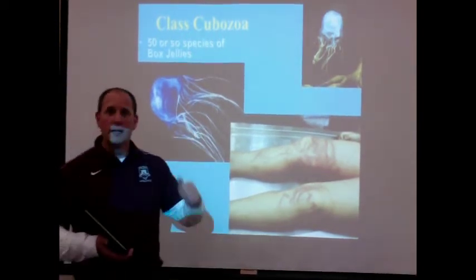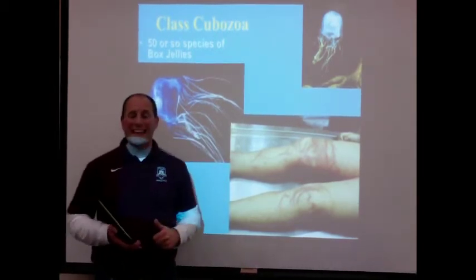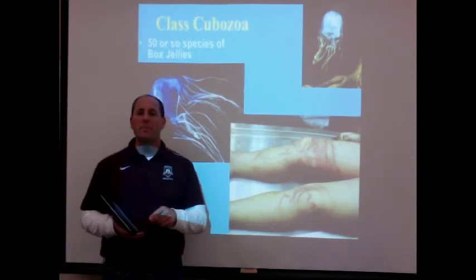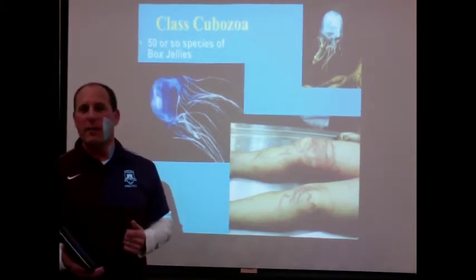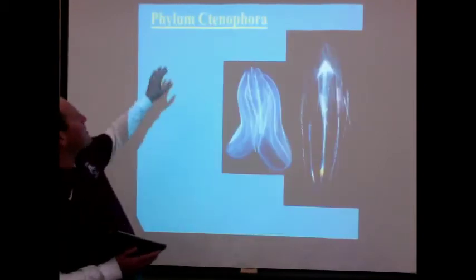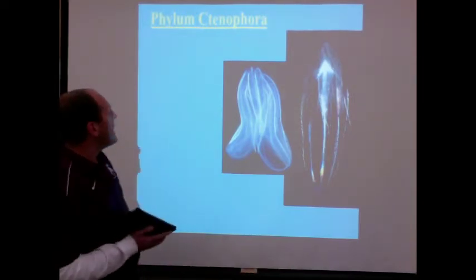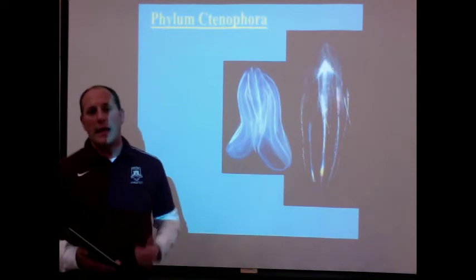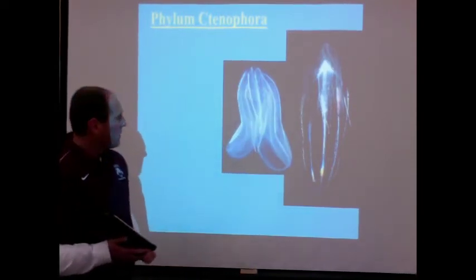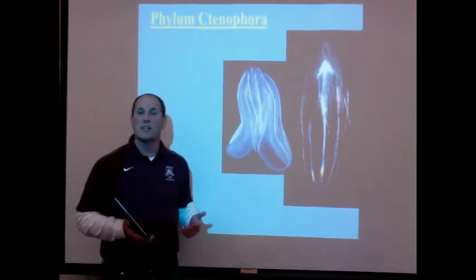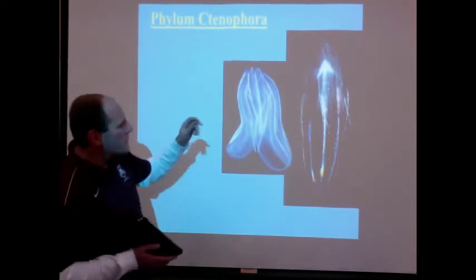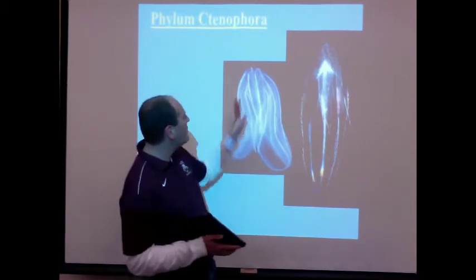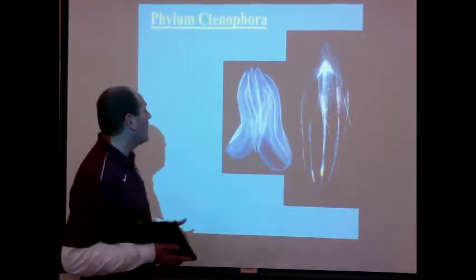So those are the four classes — Hydrozoa, Scyphozoa, Anthozoa, and Cubozoa — in the phylum Cnidaria. Now I'd like to talk about one more phylum: the phylum Ctenophora, C-T-E-N-O-P-H-O-R-A. When you look at pictures of these, one of the first thoughts is that they look just like jellies. They do look very much like jellies — they have the medusa form. In fact, one of the common names for Ctenophora is the comb jellies. You can see these little light-colored comb-like pieces sticking out — the name actually means comb holder.